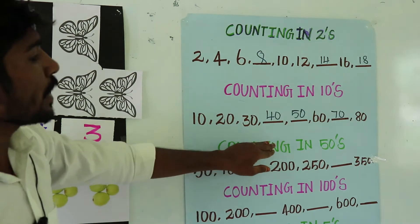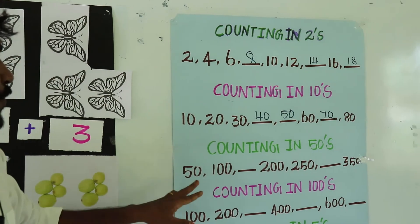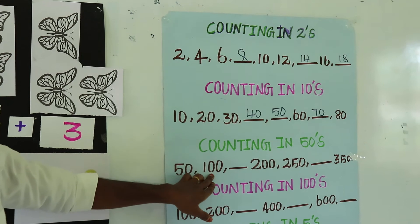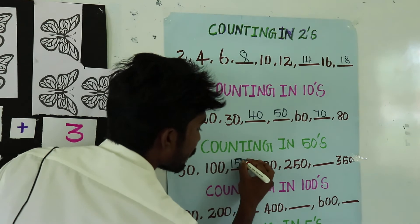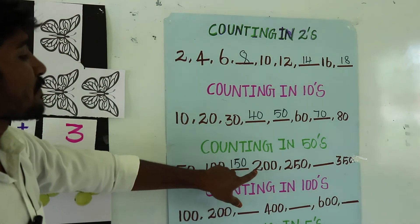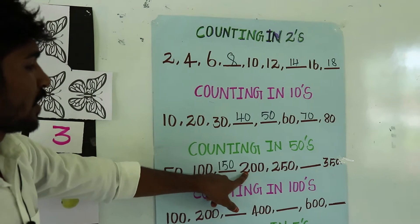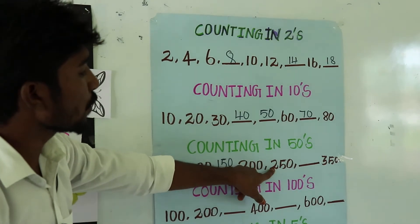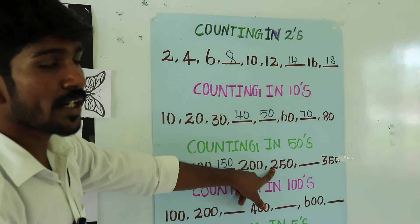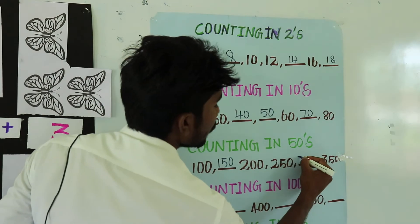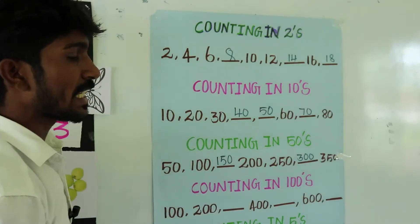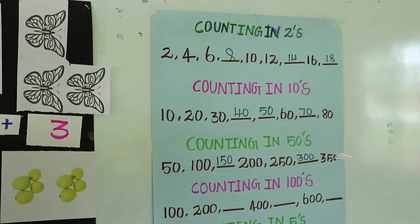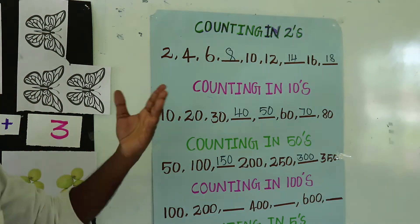The next one, counting in 50s. So 50 plus 50 is equal to 100, 100 plus 50 is equal to 150, 150 plus 50 is equal to 200, 200 plus 50 is equal to 250, 250 plus 50 is equal to 300, 300 plus 50 is equal to 350, 350 plus 50 is equal to 400, and so on.